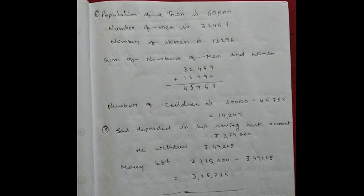So, here, men and women was given. So, children's population is from the total number of population minus the sum of the numbers of men and women. The population of the town is 60,000. Number of men is 32,457. Number of women is 13,296. Sum of the number of men and women is 45,753. Number of children is 60,000 minus 45,753 equal to 14,247.